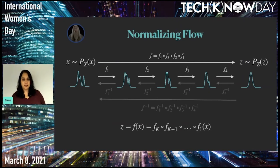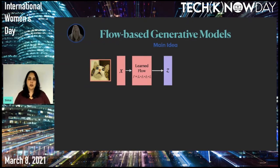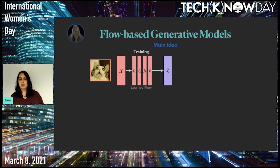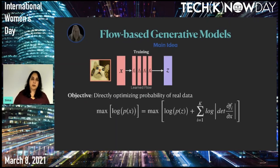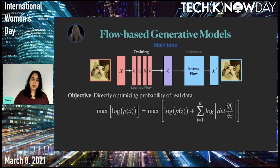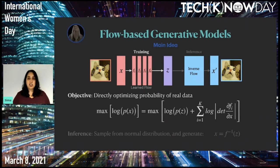Putting it back in our generative model: we learn a single function — the flow — where the composition of functions translates in the neural network world into different blocks being stacked together. Each block is easily invertible with an easy-to-compute Jacobian determinant, and they are trained together while we directly optimize the probability of real data. In inference, we use the inverse flow to either reconstruct X from Z, or randomly sample Z from the normal distribution and generate new images. The inverse flow is just the inverse blocks stacked in reverse order.